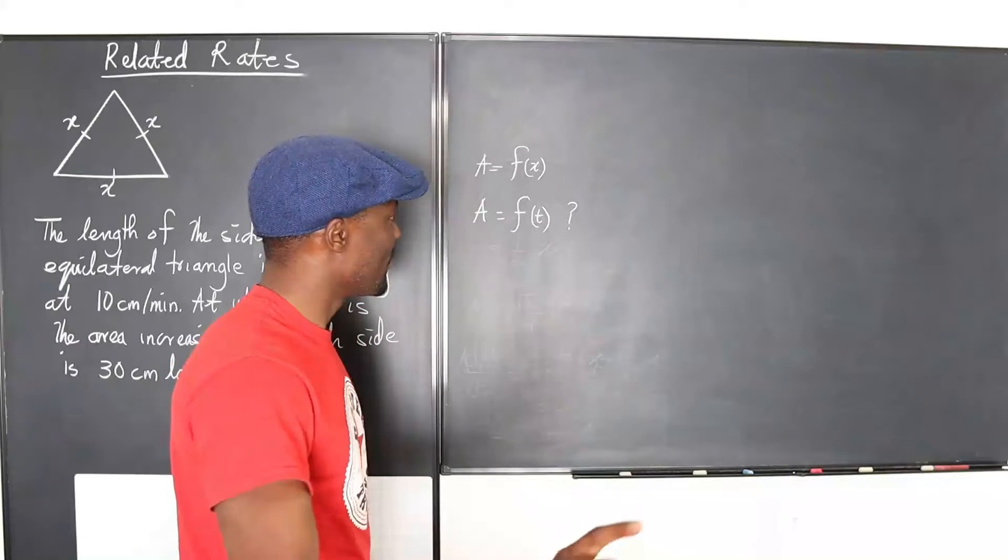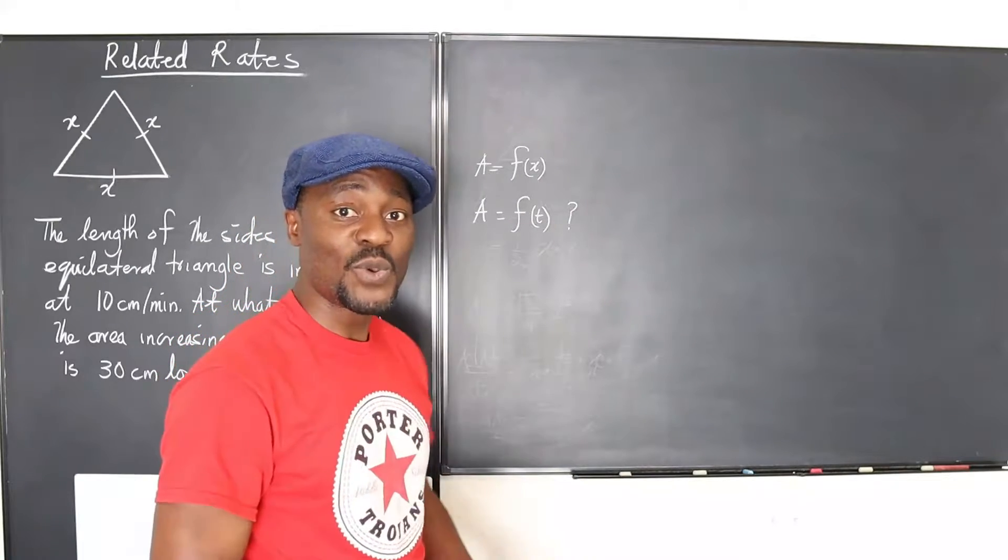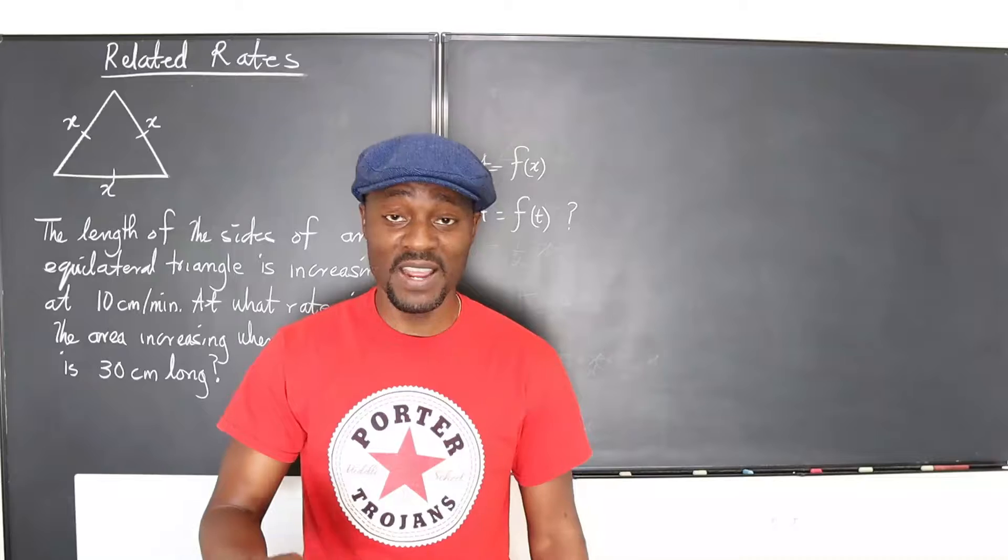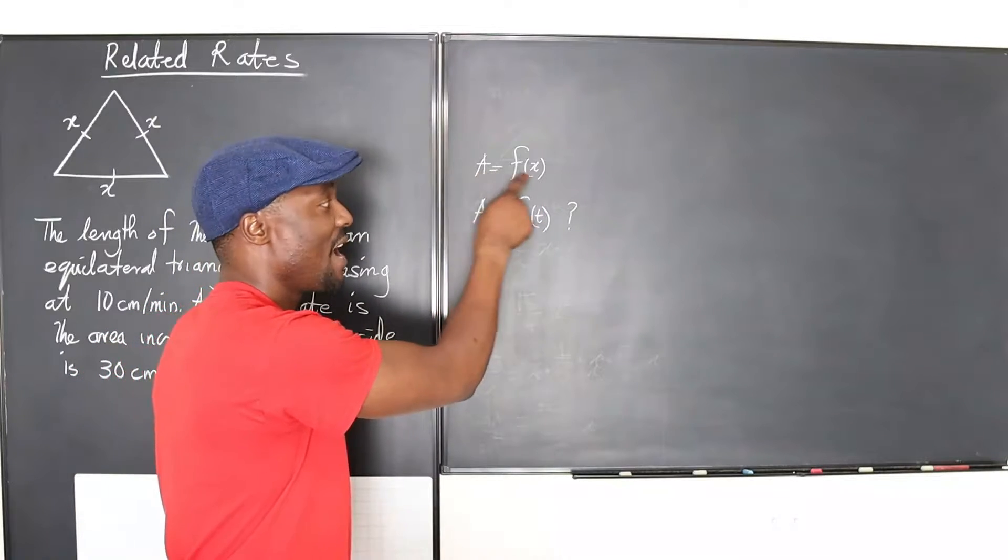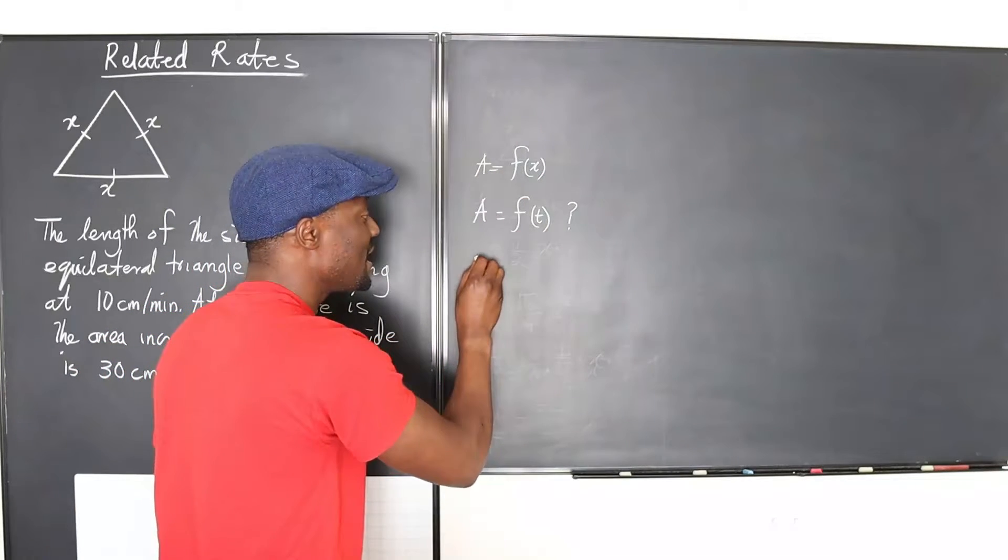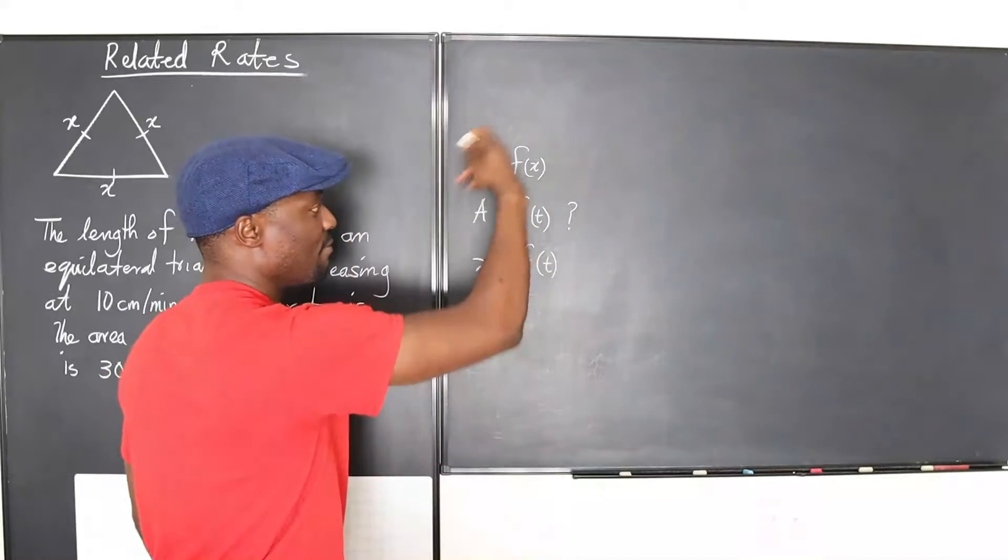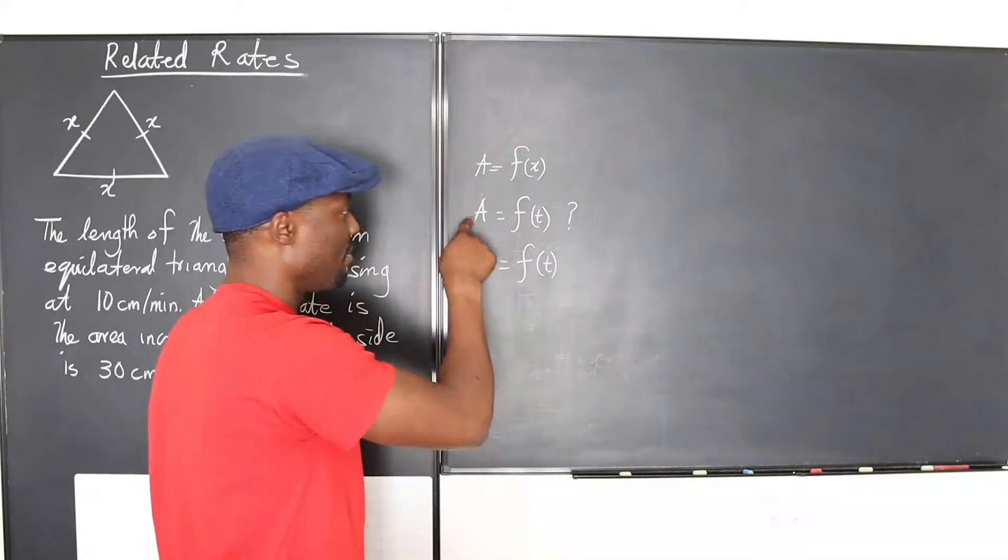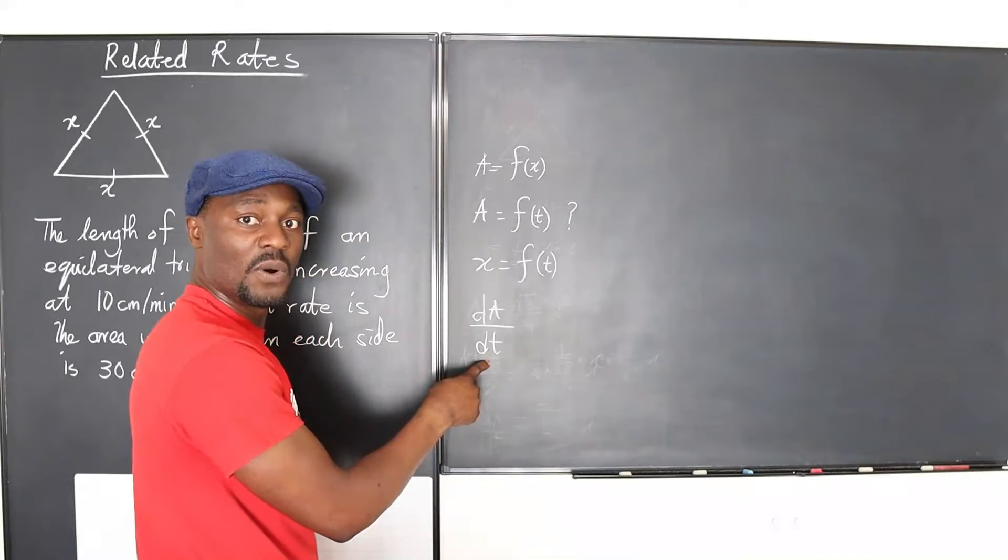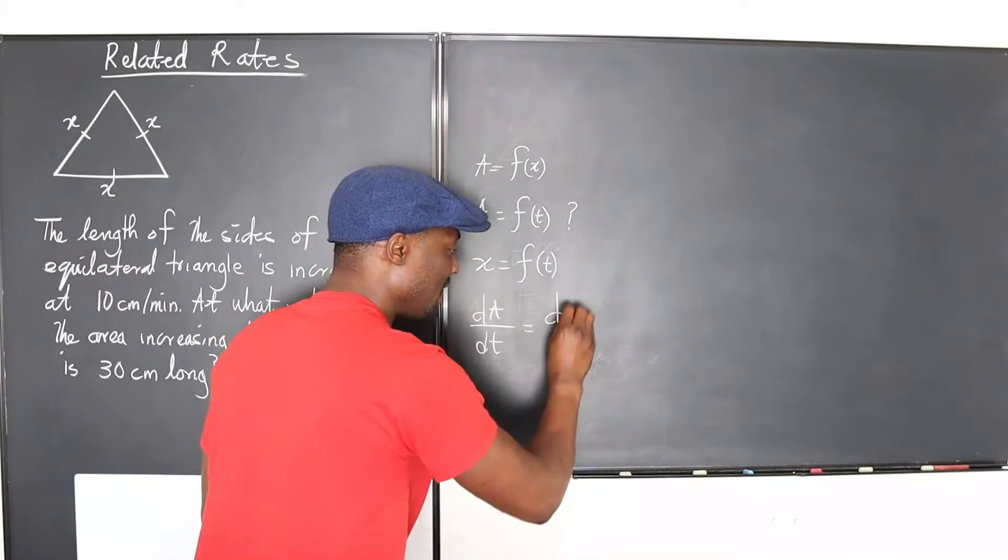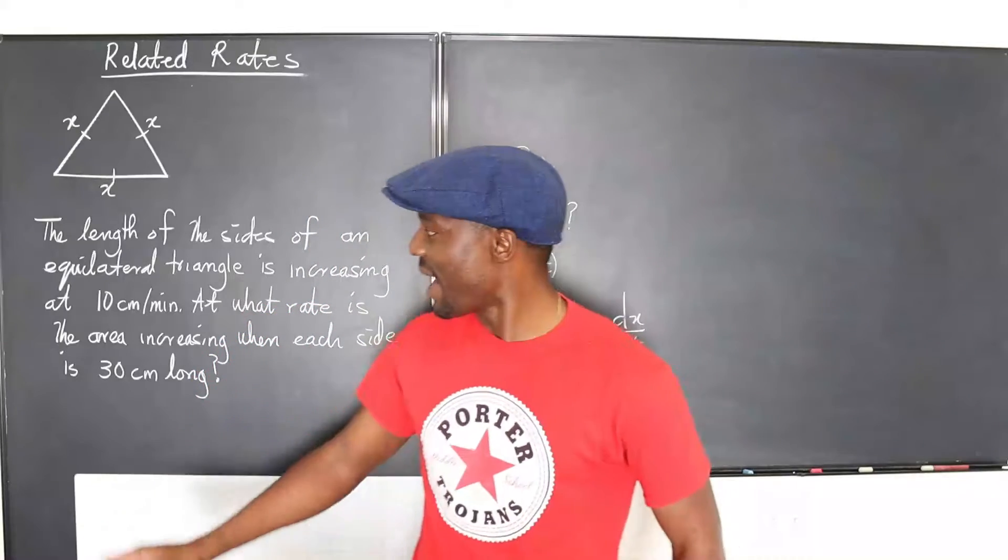But we know the relationship between A and x. Do we know it? Well, you're expected to have learned how to find the area of a triangle, which you know. So let's show that we know how to find the relationship between area and the length of the side, because they've already given us x as a function of t. Remember, the connection here is the chain rule, because this is a composite function.